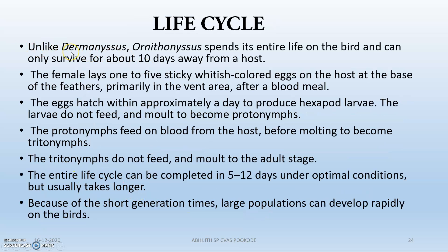Life cycle: unlike Dermanyssus, Ornithonyssus spends its entire life on the bird and can only survive for about 10 days away from the host. The female lays 1 to 5 sticky white-colored eggs on the host — that is the main feature — at the base of the feathers, primarily in the vent area, after a blood meal. The eggs hatch in approximately one day and produce hexapod larvae, that is 6-legged larvae.